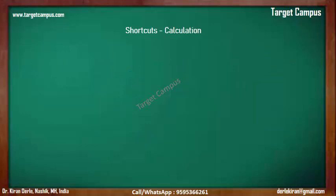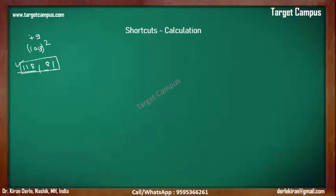Let's say we have 109 and we are asked to calculate the square of 109. When numbers are close to 100, we calculate the difference first. The difference is plus 9 from 100. Our answer gets divided into two parts: the square of plus 9 is 81, and 109 plus 9 is 118. So 11881 is the square of 109.